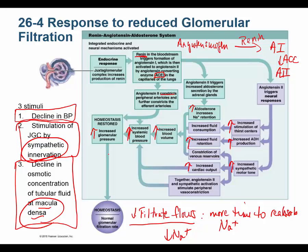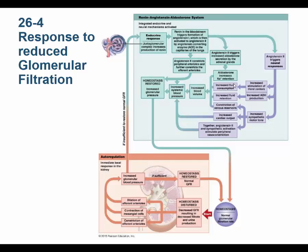Angiotensin II also increases sympathetic tone — a positive feedback, because the sympathetic nervous system can itself cause renin secretion. Increased cardiac output from sympathetic tone further raises blood pressure. All of this increases blood pressure and therefore increases GFR. You may have heard of ACE inhibitors: they block that enzyme, preventing conversion of angiotensin I to angiotensin II, which is beneficial after a heart attack by preventing the blood pressure increase.